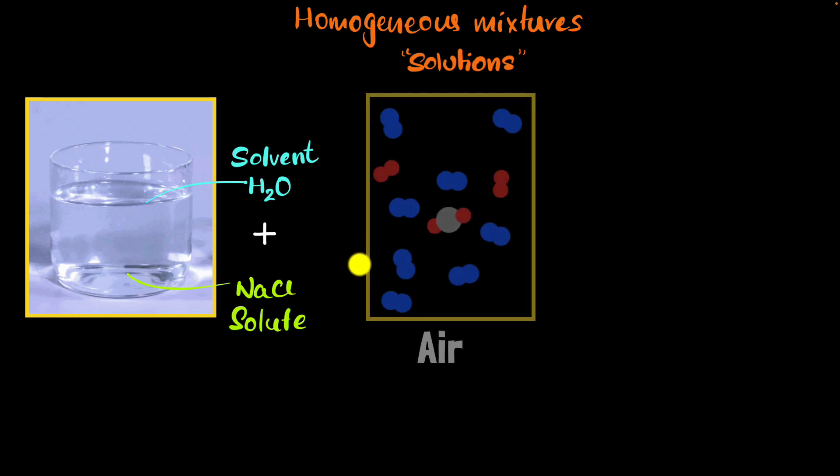But now let's look at more examples. What about air? Well, air is a homogeneous mixture of oxygen, nitrogen, carbon dioxide and many other gases. So air is a solution. So look, solution need not be just liquids.